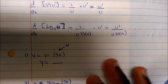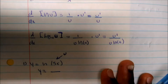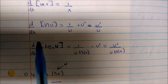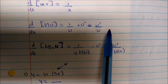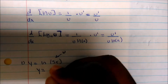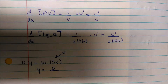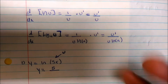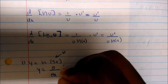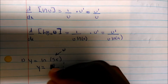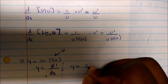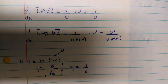The derivative of ln(x) is just 1/x. And ln(u) says it's u prime over u. So u prime — the derivative of u — is just 5. Over plain old u, which will just be 5x. We can cancel those 5s, so my derivative is really 1/x.